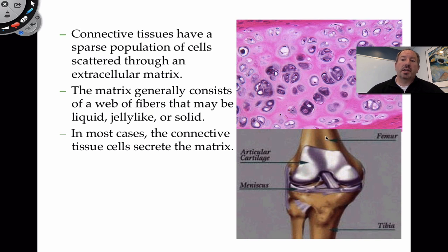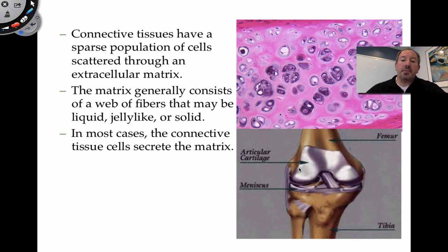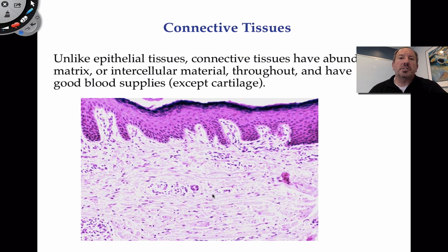Here you're looking at the femur at the knee joint. This is the distal part of the femur, meaning the furthest part away from the core of the body. Here's the articular cartilage that surrounds the femur at the knee joint — where the two bones come together. This is the tibia and the fibula. There's a lot of connective tissue at the knee: articular cartilage, bone, the meniscus — which is a C-shaped pad of cartilage — and many ligaments that hold these bones all together. Unlike epithelial tissue, connective tissue has an abundant amount of matrix — a lot going on between the cells.